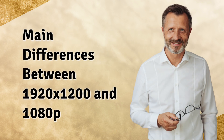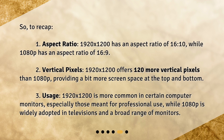Main differences between 1920 by 1200 and 1080p: 1. Aspect ratio — 1920 by 1200 has an aspect ratio of 16:10, while 1080p has an aspect ratio of 16:9. 2. Vertical pixels — 1920 by 1200 offers 120 more vertical pixels than 1080p, providing a bit more screen space at the top and bottom. 3. Usage — 1920 by 1200 is more common in certain computer monitors, especially those meant for professional use, while 1080p is widely adopted in televisions and a broad range of monitors.